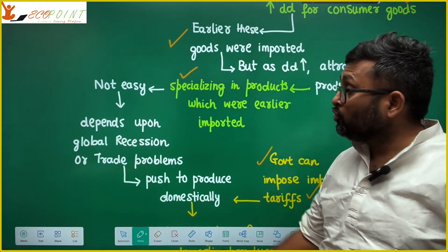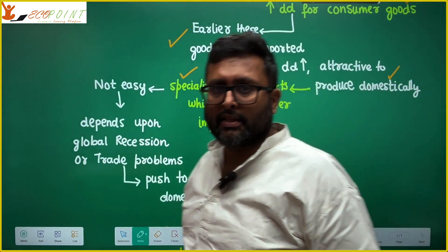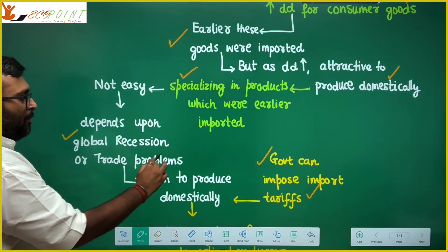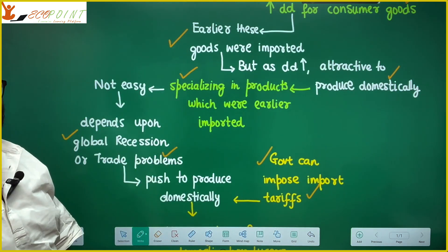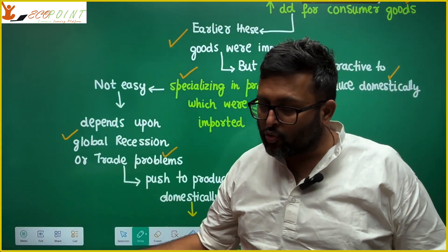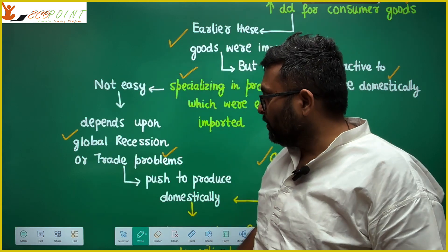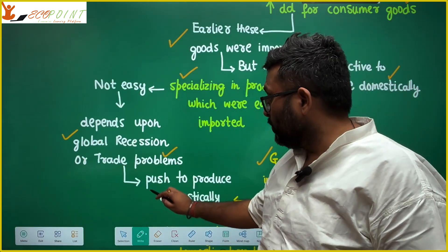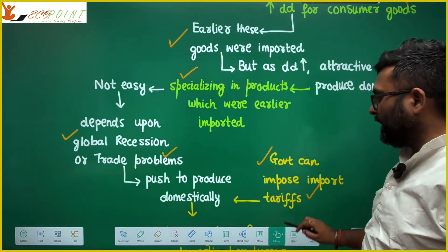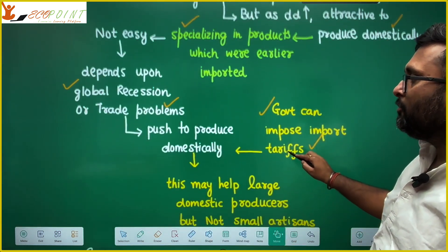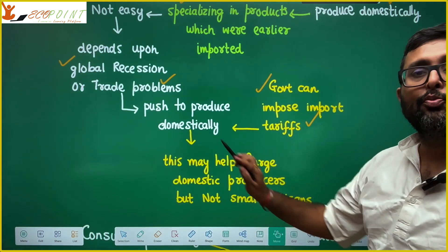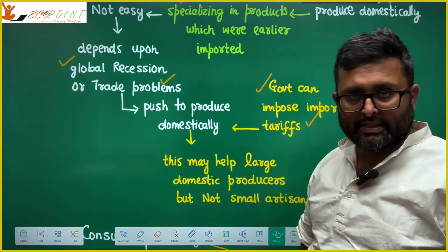Import substitution — naturally the government can help, for example by helping domestic goods to be produced in their own country by imposing import tariffs. Secondly, global factors also help. If there is a global recession or trade problems, you are forced to produce goods domestically that you were earlier importing. And the government also pushes domestic production by offering protection through import tariffs.